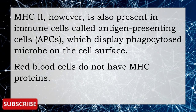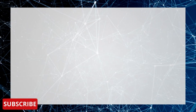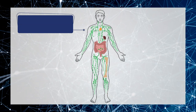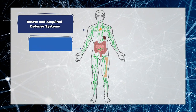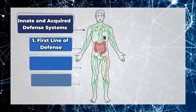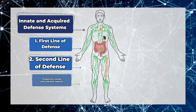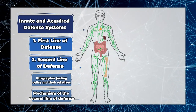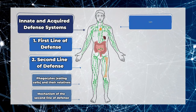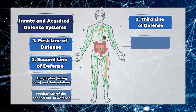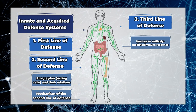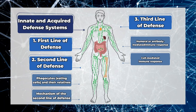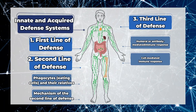Red blood cells do not have MHC proteins. In this topic we will learn: innate and acquired defense systems; the first line of defense and second line of defense, which include phagocytes and their relatives; the mechanism of the second line of defense; the third line of defense, including humoral or antibody-mediated immune response; and cell-mediated immune response and its mechanism.